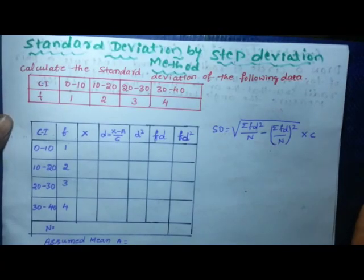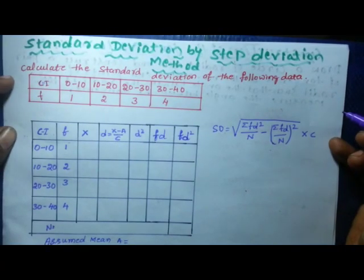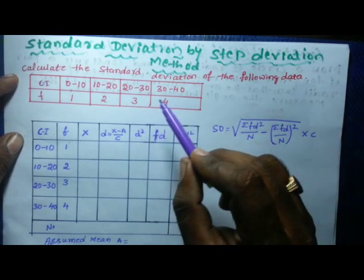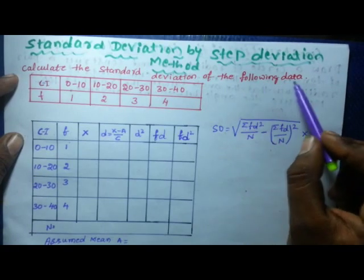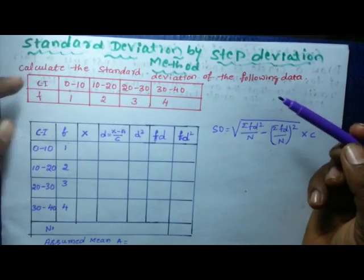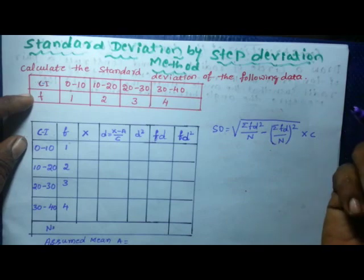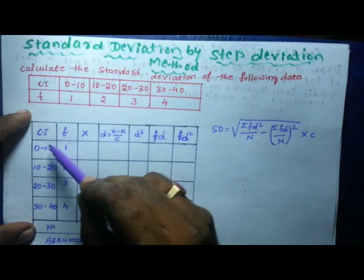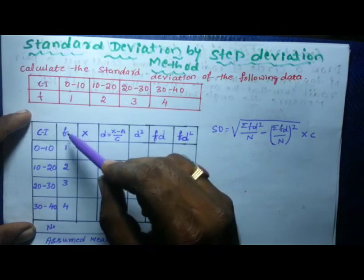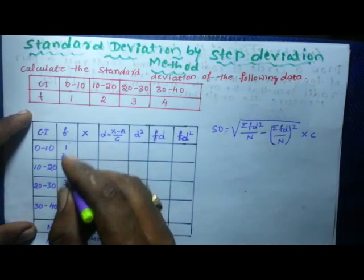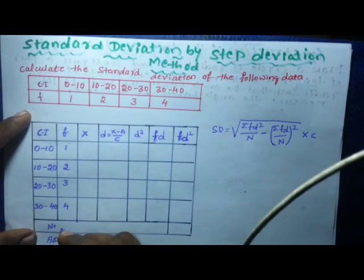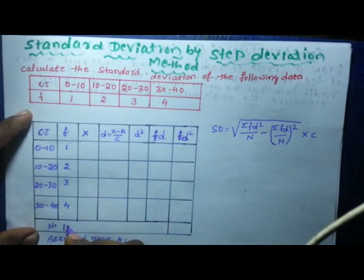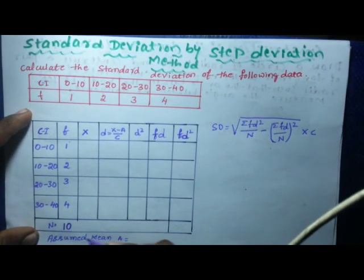Standard deviation by step deviation method. Here one problem is given to solve the standard deviation. Calculate the standard deviation of the following data — class interval and frequency are given. First, take down the values in a table with columns for class interval and frequency. If you add the frequency: 4 plus 3 plus 2 plus 1, you will get n equals 10.